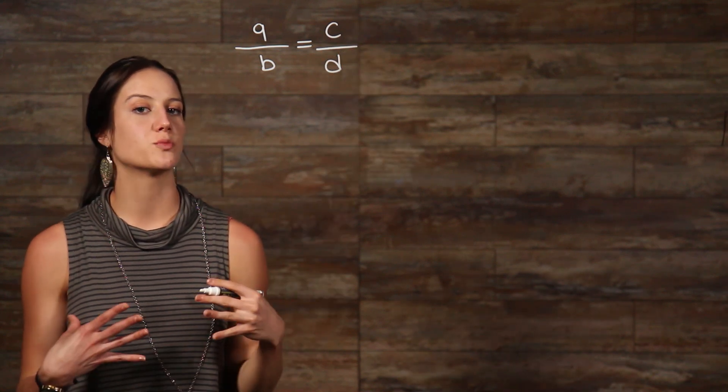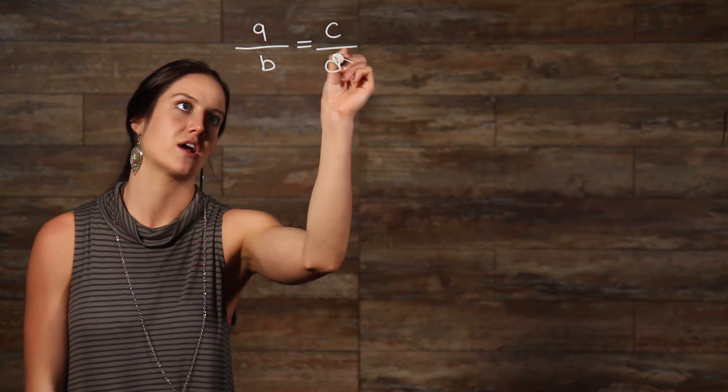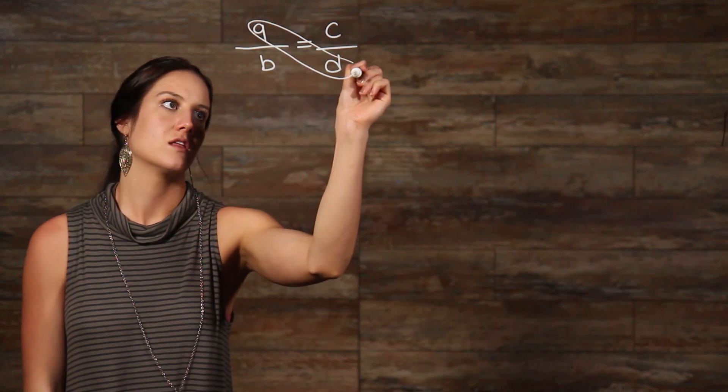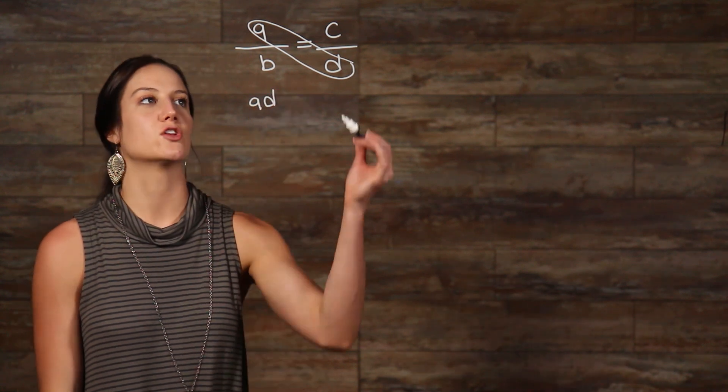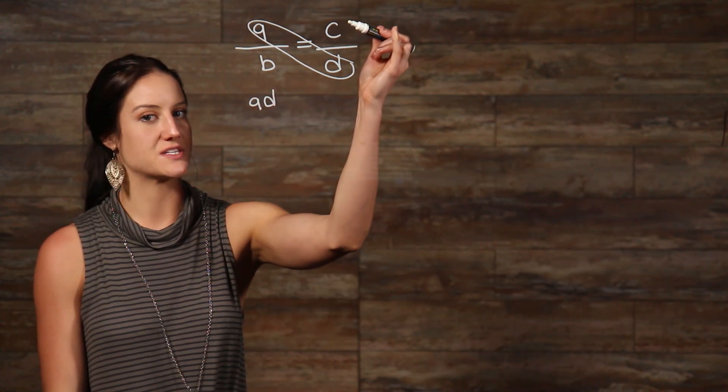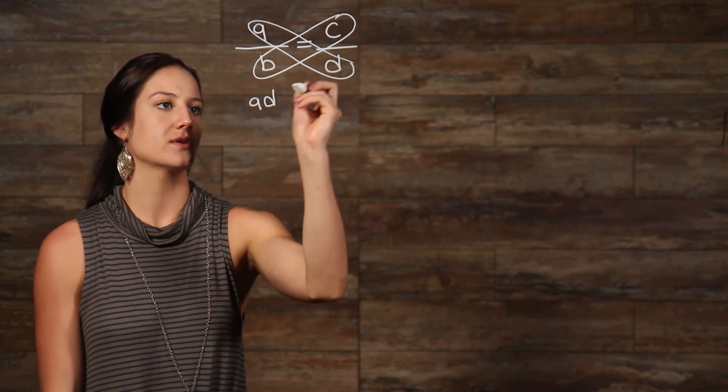Well, to cross multiply them, you multiply the numerator in the first fraction times the denominator in the second fraction. Then you write that number down. Then you multiply the numerator of the second fraction times the denominator of your first fraction, then write that number down.